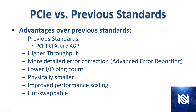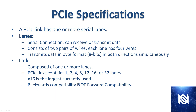Now we're going to compare PCIe versus previous standards. The previous standards include PCI, PCIX, and AGP. PCIe advantages include higher throughput, more detailed error correction with advanced error reporting, and lower IO pin count — so these devices are physically smaller, which in the data center is a big advantage since we're packing more functionality into smaller packages. There's also improved performance scaling, and it's hot-swappable, meaning you don't have to power down devices to take them in and out.